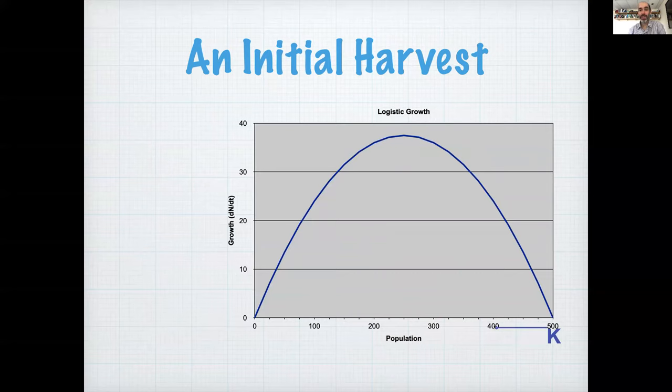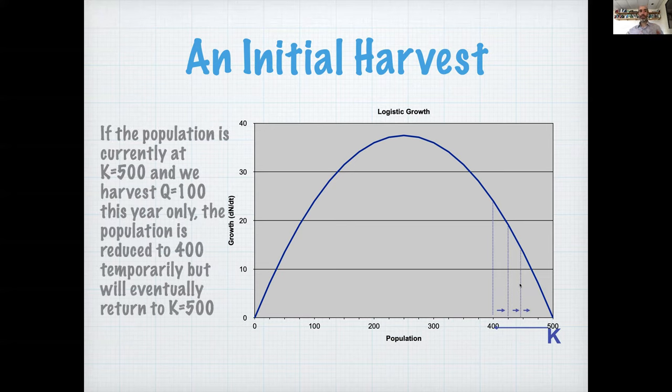When the population is at 400, we can use the growth curve to figure out what its growth rate is. It's a little bit less than 25, so maybe 23. And so the population would grow in that year back up to about 423. And the next year, it would grow again, it would grow about 18. And then it would grow again, 13 or 14, and so on and so forth. And then it would eventually grow back to the carrying capacity. And you can see the size of this increment gets smaller every year because it's growing back asymptotically. So you'd see something that's at its carrying capacity, then you do the harvest, it jumps down to 400, and then you see it from that point continuing on, just that upper part of the sigmoidal curve.